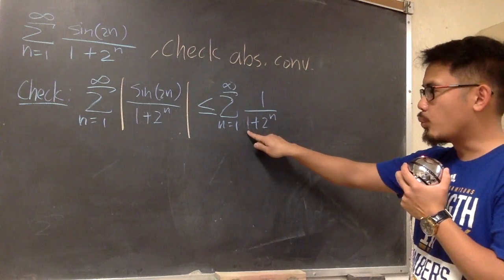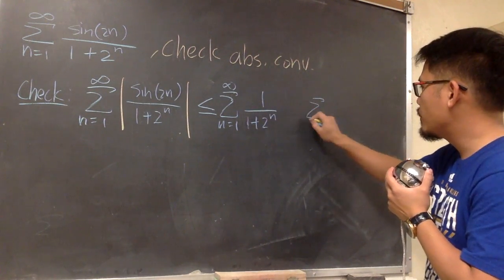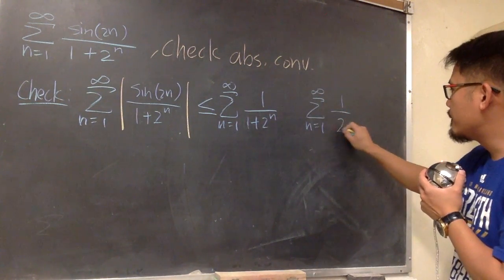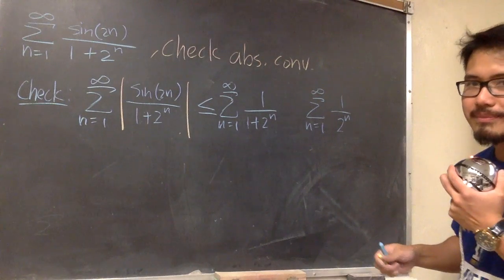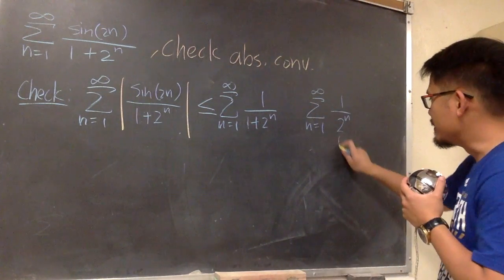Well, if you ignore the 1 in the denominator, you are looking at this as sigma, when n goes from 1 to infinity, and then we just have 1 over 2 to the n instead. Do we know much better about this? Yes, we do. We certainly do.